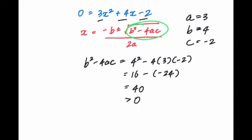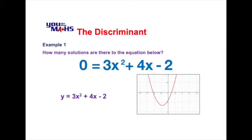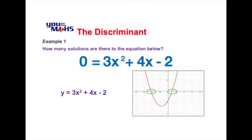Because the discriminant is 40, which is greater than zero, we have the square root of a positive number. Adding and subtracting that non-zero number gives two possible solutions. In a graphical context, the parabola y equals 3x squared plus 4x minus 2 crosses the x-axis at two locations, confirming there are two solutions to 0 equals 3x squared plus 4x minus 2.